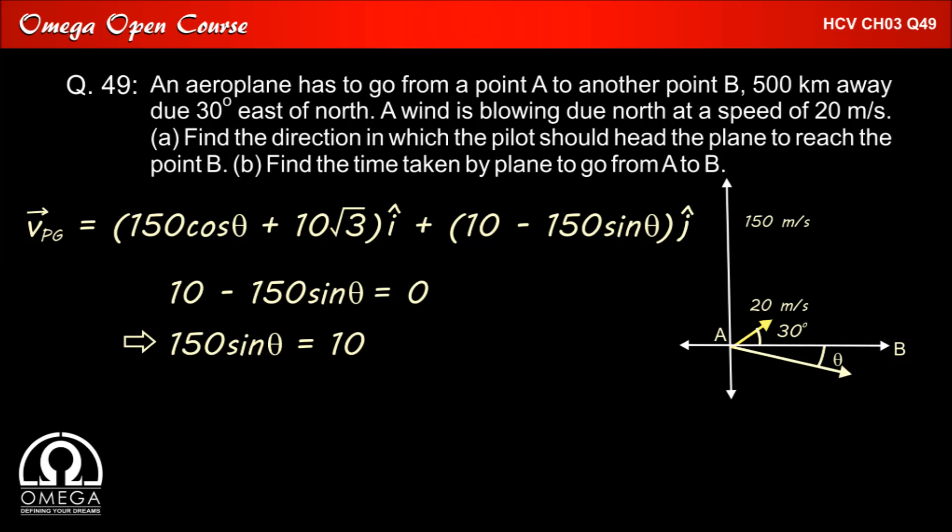Which implies 150 sin theta equals 10, which gives sin theta = 1/15. Therefore, theta = sin inverse (1/15). So the plane must fly at angle sin inverse (1/15) with AB.